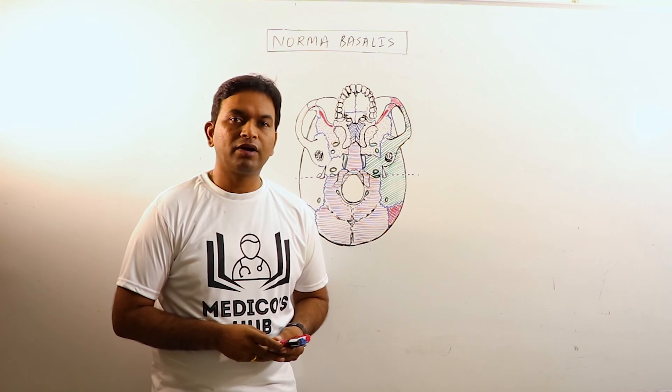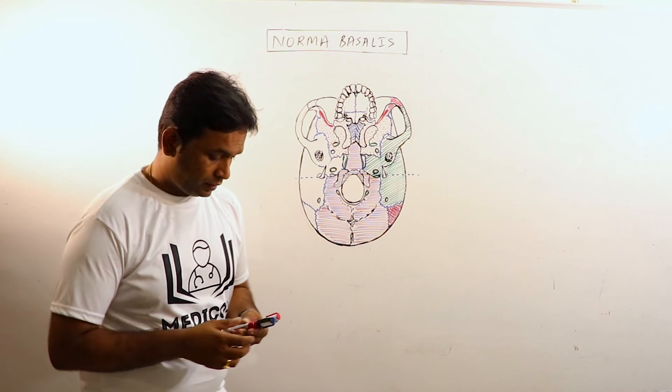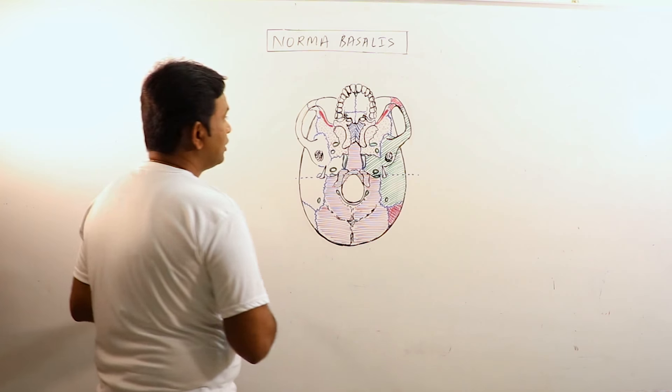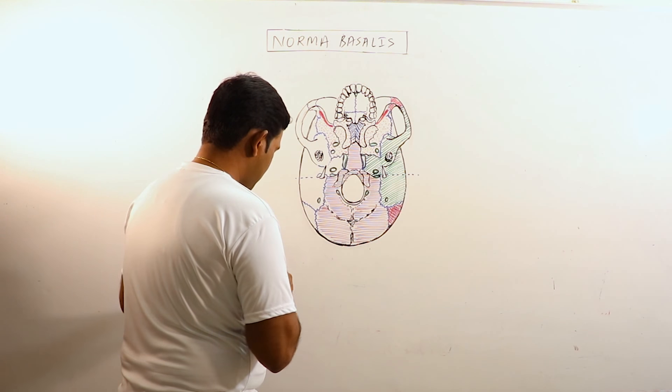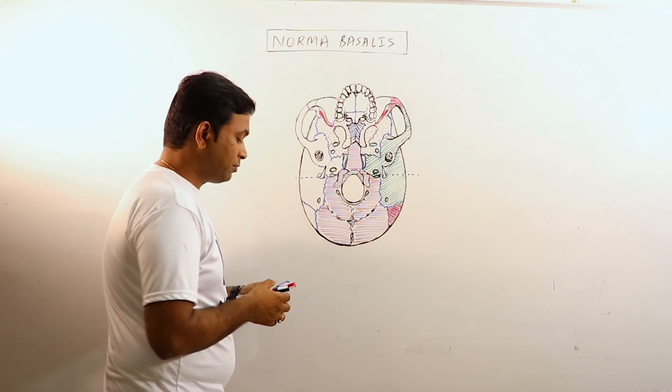Norma basalis is that part of skull when we observe it inferiorly. Now for convenience, Norma basalis is divided into three parts.